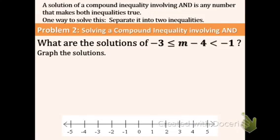Here's some blanks for you to fill in at the top of the next page. A solution of a compound inequality involving AND is any number that makes both inequalities true. So it has to satisfy both inequalities. And in order to do this, there's two different approaches. We're going to focus first on separating the two inequalities. You may prefer this, you may not.